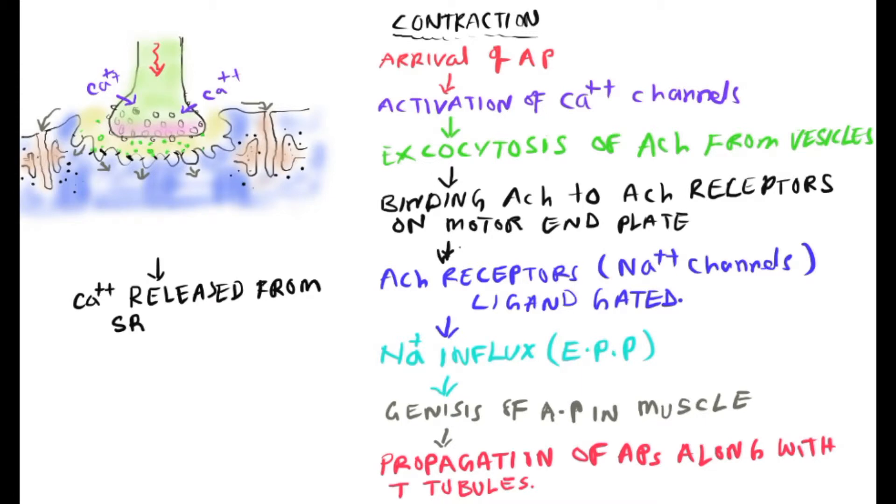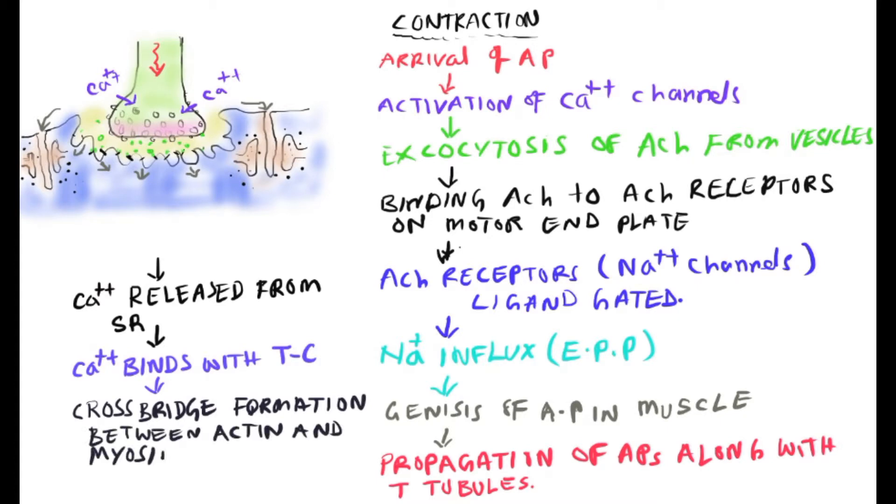The highly modified sarcoplasmic reticulum acts as storage for calcium ions. Once calcium scatters in the cytosol, it binds to troponin C, a calcium-binding protein in complex with the actin fiber. This forms cross-bridge formation and subsequent shortening of the sarcomere in the muscle.